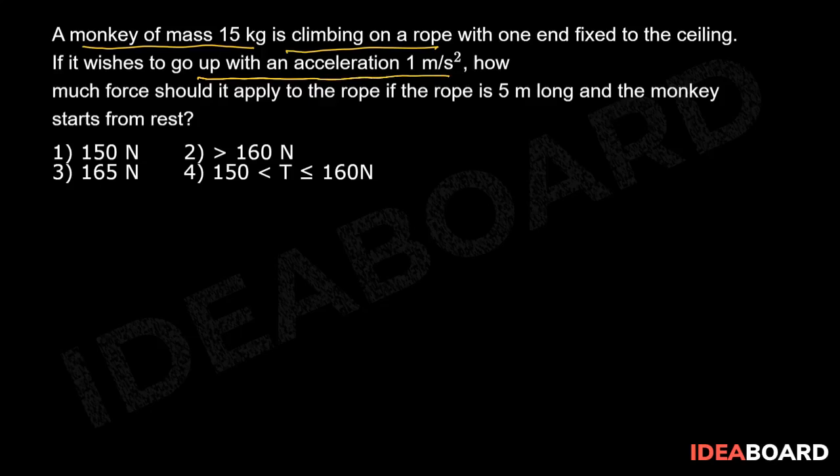So in order to move up with an acceleration of 1 m per second square, the monkey will pull the rope in the downward direction. Therefore, by Newton's third law, the rope will pull the monkey in the upward direction.